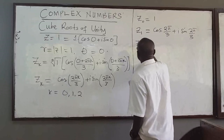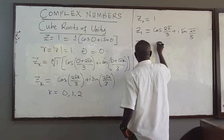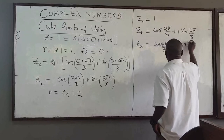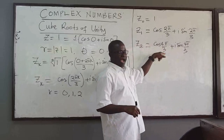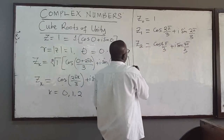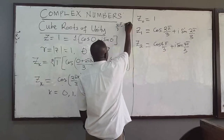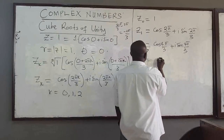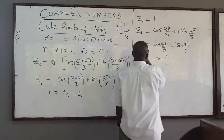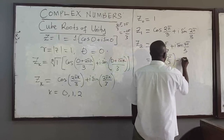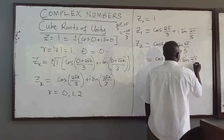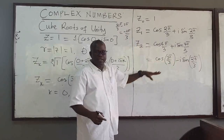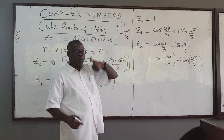The third root, Z sub two, is obtained by setting k equals two. That gives cosine of four pi over three plus i sine of four pi over three. Note that four pi over three is more than pi. If you take four pi over three minus two pi, you get negative two pi over three. So you can also rewrite Z sub two as cosine of negative two pi over three minus i sine of two pi over three. So Z sub zero, Z sub one, and Z sub two are the three cube roots of unity.